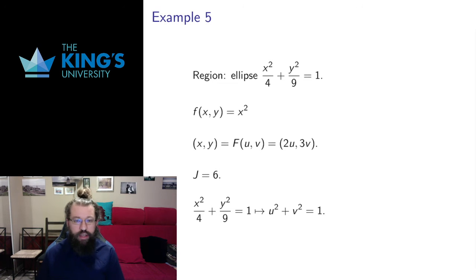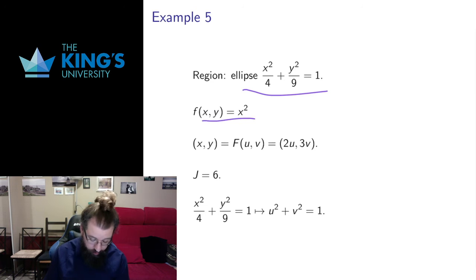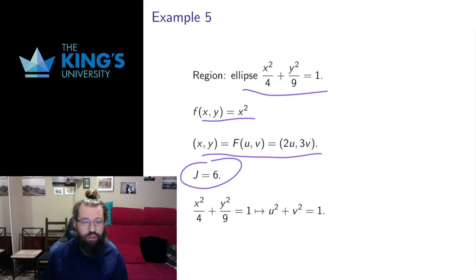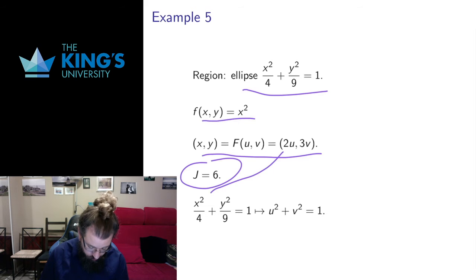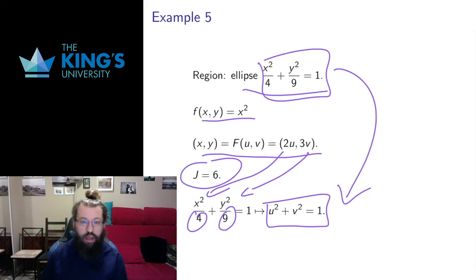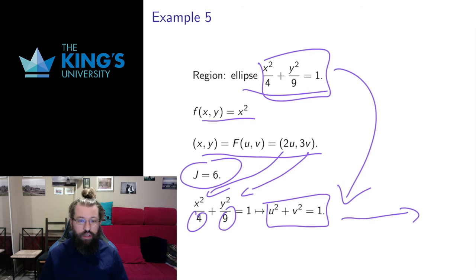I want to talk about chaining some changes of variables together. Say I want to integrate x squared over an ellipse defined by x squared over 4 plus y squared over 9 equals 1. I'm going to do two consecutive changes of variables. First, a linear change where x equals 2u and y equals 3v. The Jacobian of this transformation — the determinant of the matrix of partial derivatives — gives J equals 6. Substituting 2u and 3v cancels those terms, giving u squared plus v squared equals 1, so the ellipse turns into a unit circle.